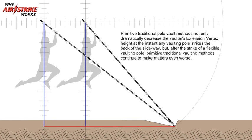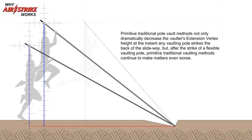Primitive traditional pole vault methods not only dramatically decrease the vaulter's extension vertex height at the instant any vaulting pole strikes the back of the slideway, but after the strike of a flexible vaulting pole, primitive traditional vaulting methods continue to make matters even worse.